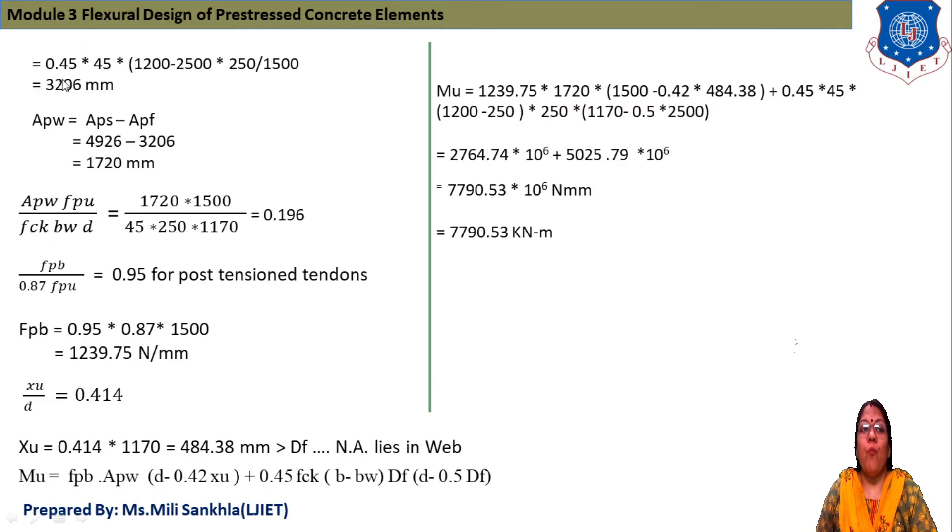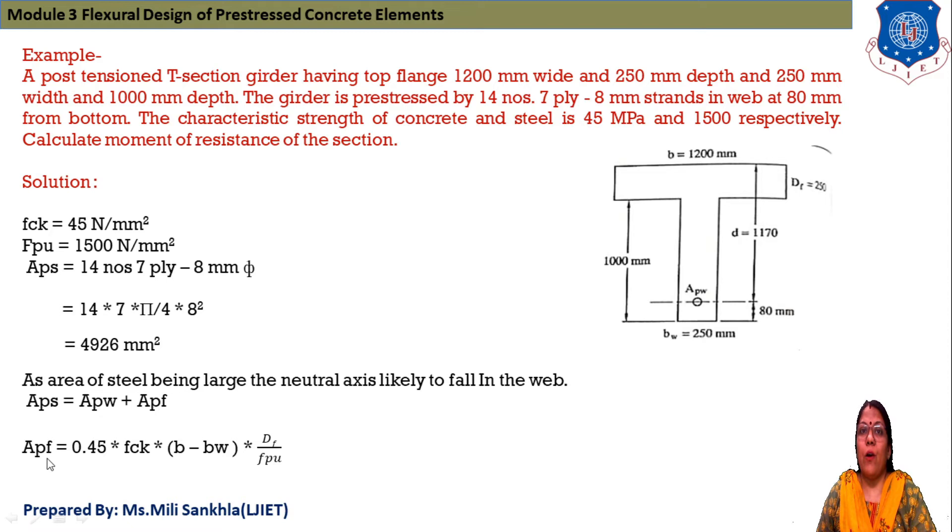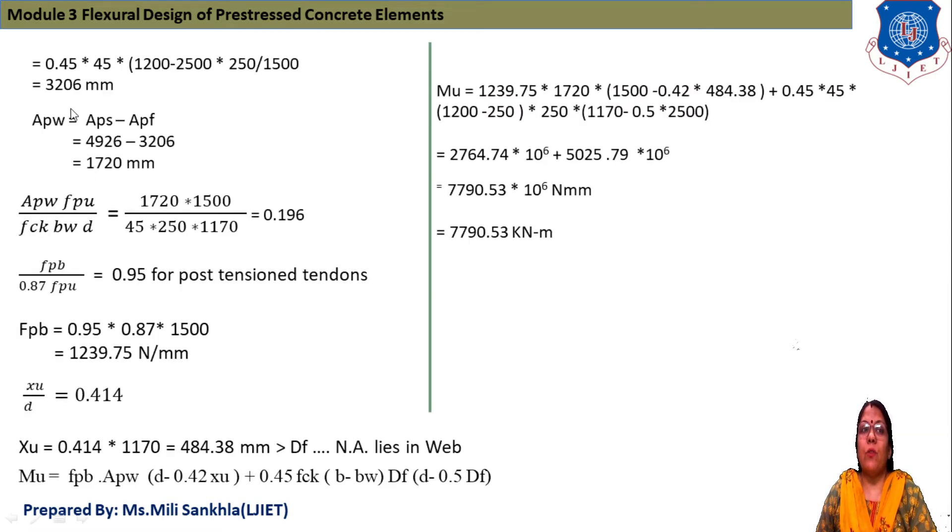0.45 × 45 × (1200 - 250) × 250 / 1500 equals 3206 mm². APF equals 3206 mm². Now APW equals APS minus APF, which is 4926 minus 3206, and we get 1720 mm².